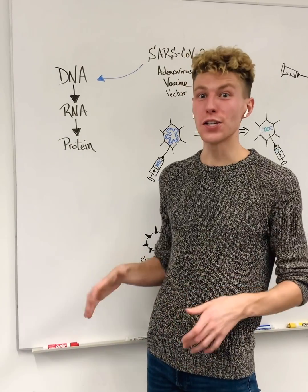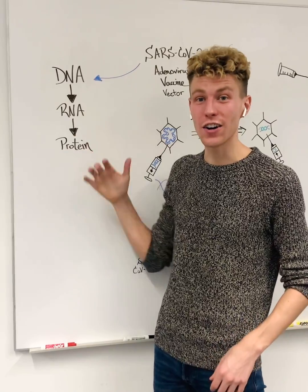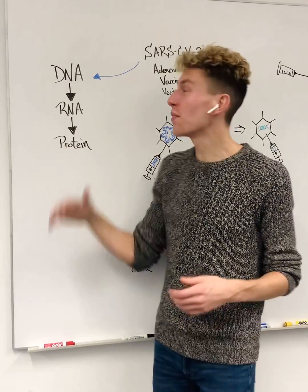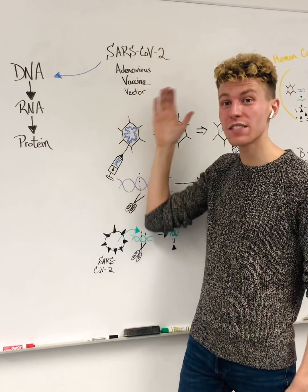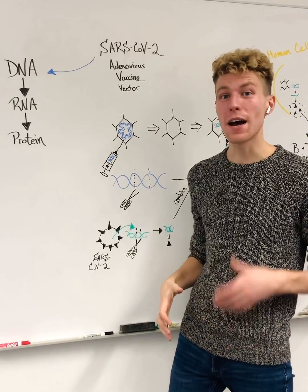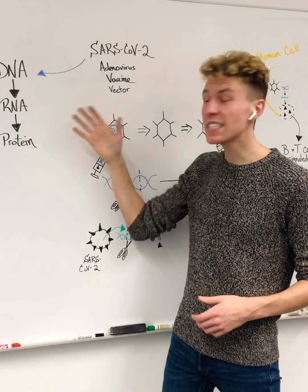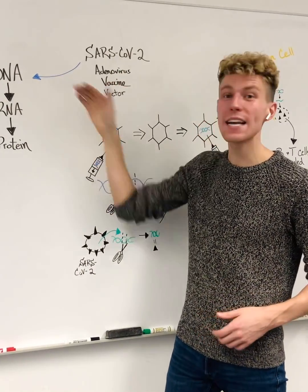The flow of our genetic information moves from DNA to RNA to protein. The SARS-CoV-2 Adenovirus vaccine vector designed by Oxford and AstraZeneca takes advantage of this pathway by coming in at the DNA level.